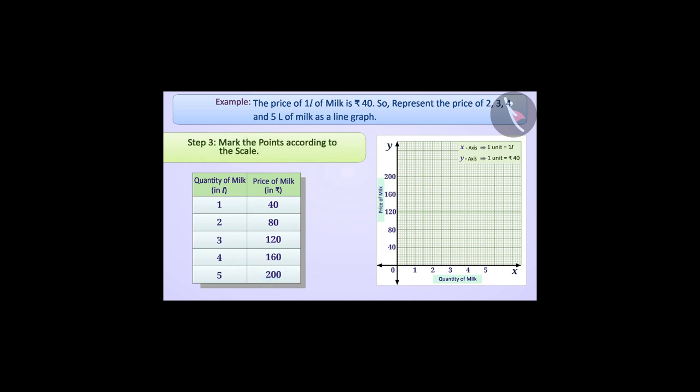Now we will mark the points according to the scale. The price of 1 liter of milk is Rs. 40, so we move 1 unit to the right on the x-axis and then 1 unit upwards. At this place, we mark a point with coordinates (1, 40).